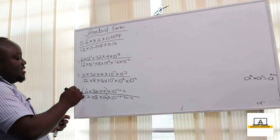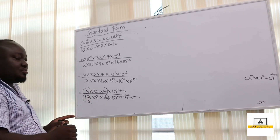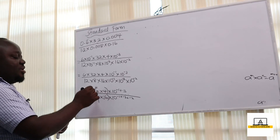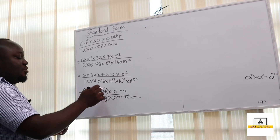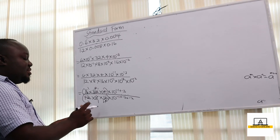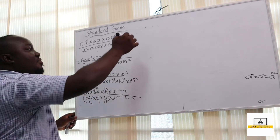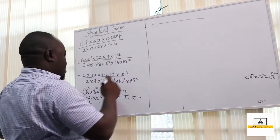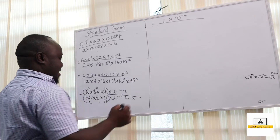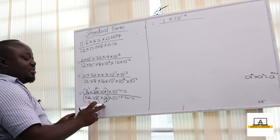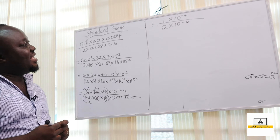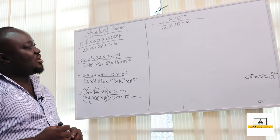When we simplify: 6 goes into 6 once and into 12 twice; 8 goes into 32 four times; 4 goes into 16 four times and into 4 once. So we are left with 1 times 1 times 1 which is 1 over 2 times 1 times 1. This gives us 1 times 10 raised to the power negative 4 over 2 times 10 raised to the power negative 6.